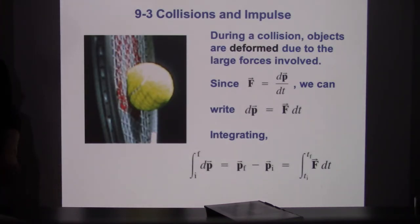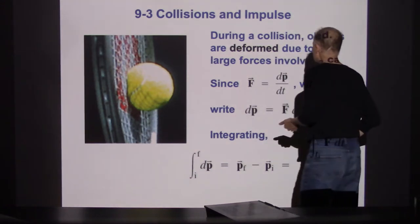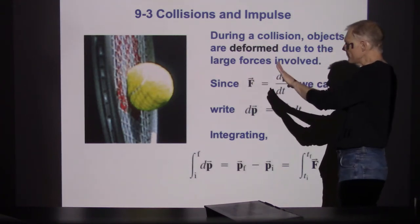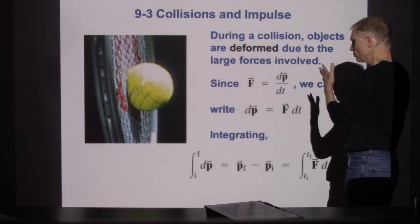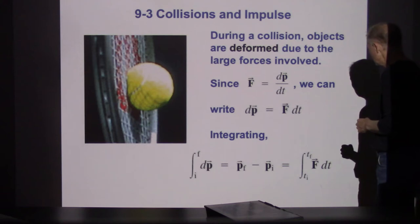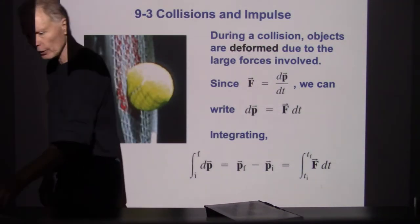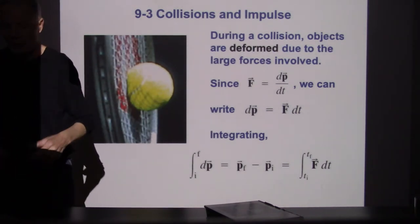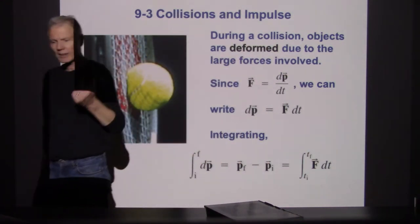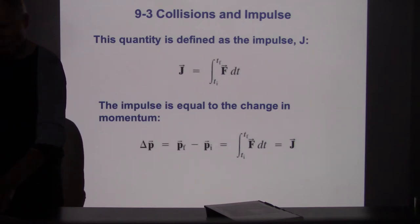Back to the tennis ball being hit with the tennis racket — during a collision, objects are deformed due to the large forces. The force equals dP/dt, so dP equals F dt. The force will vary as a function of time. If we can integrate that function, we can calculate the momentum. This amount is called the impulse J. What we can say is that the momentum transfer equals the average force times the time interval.